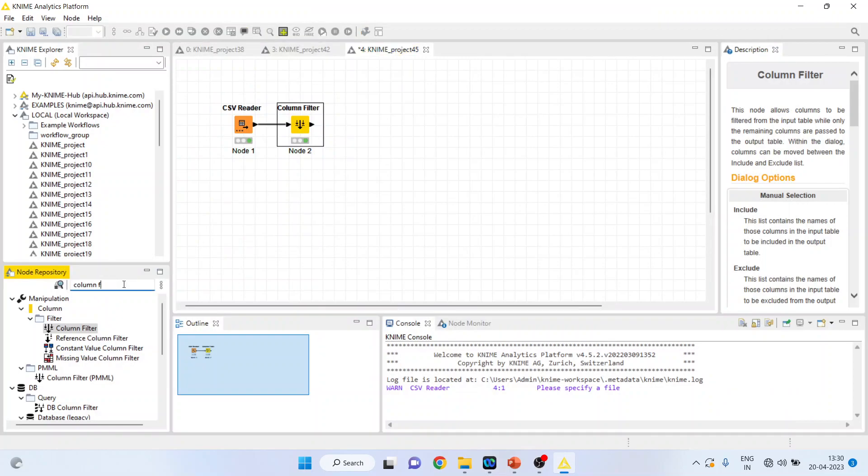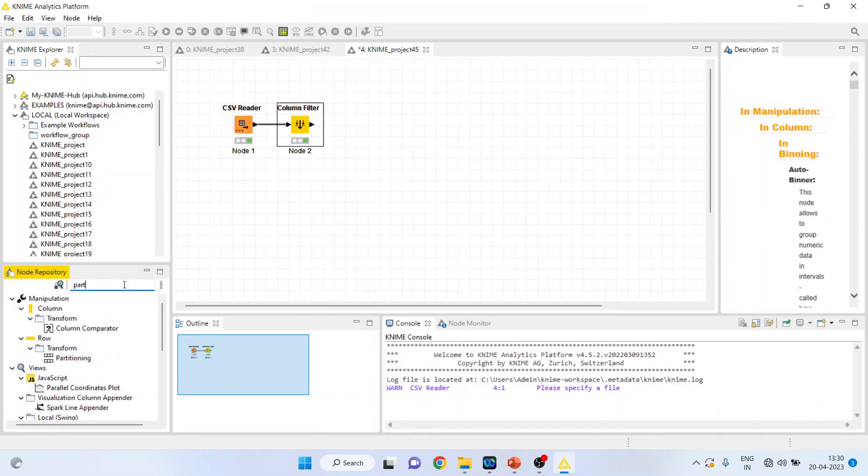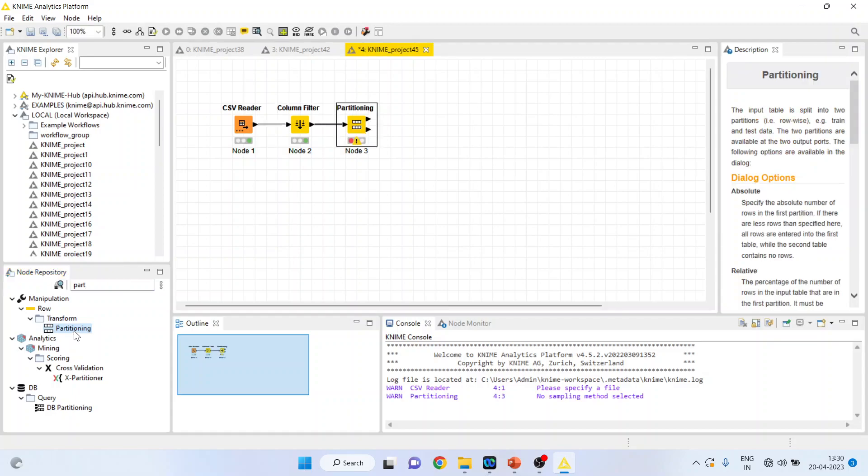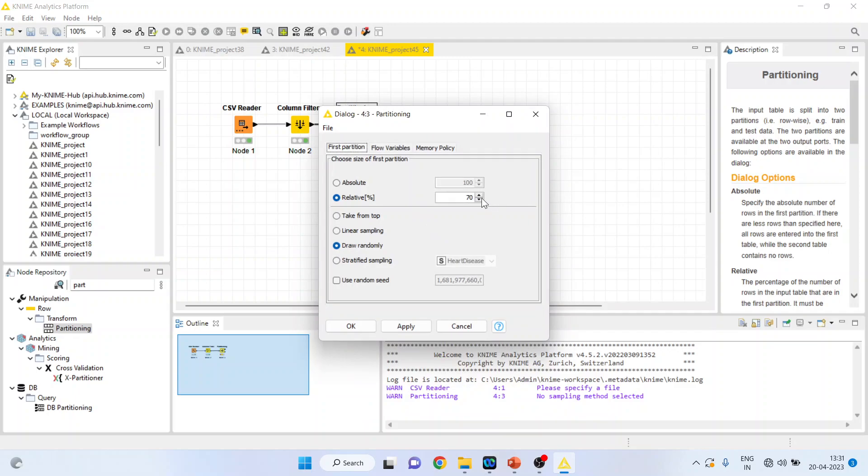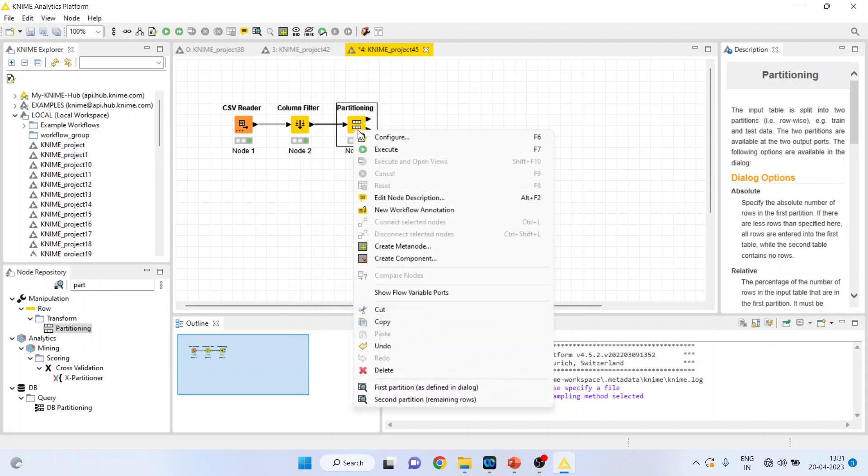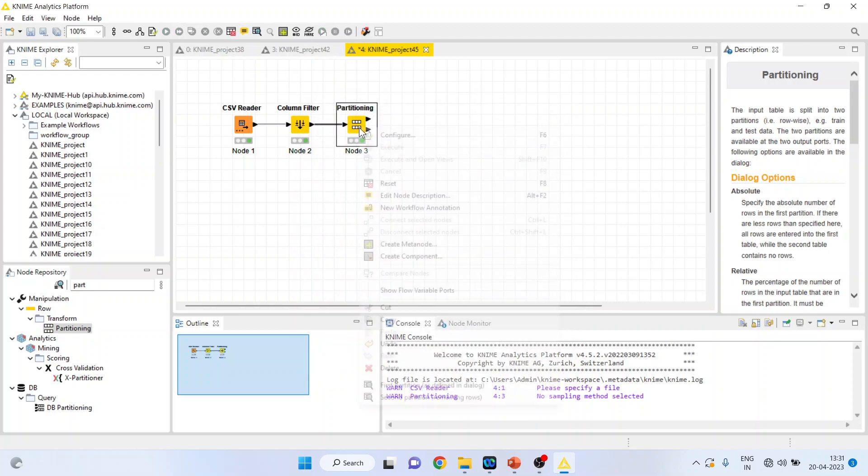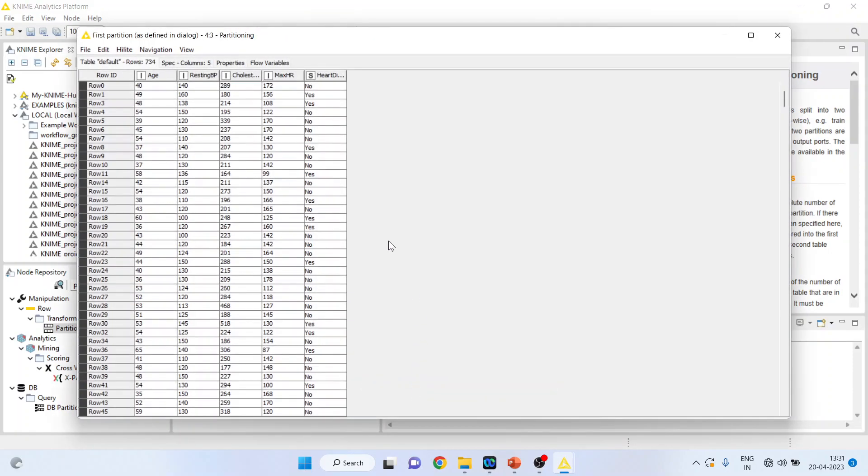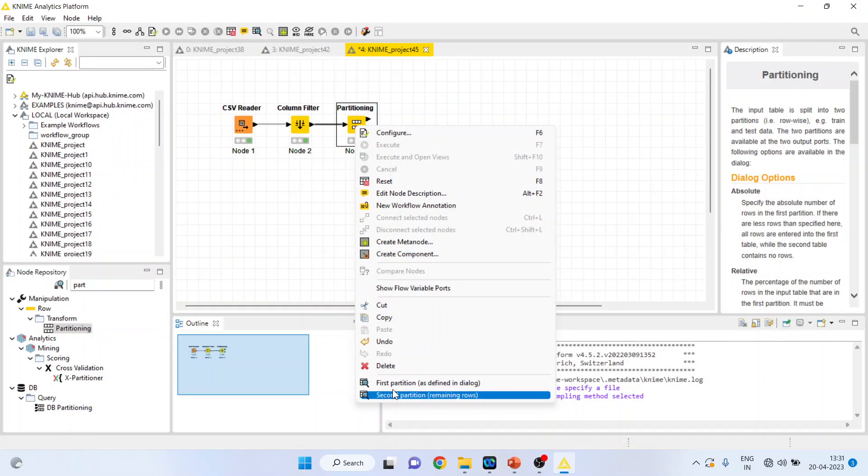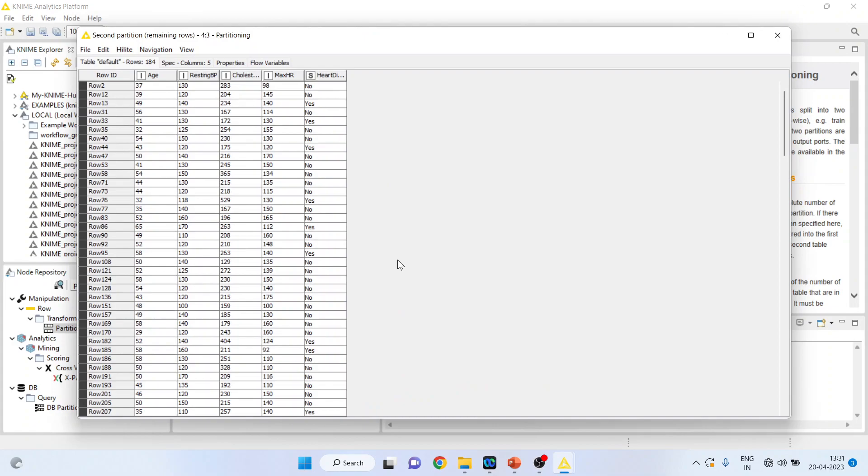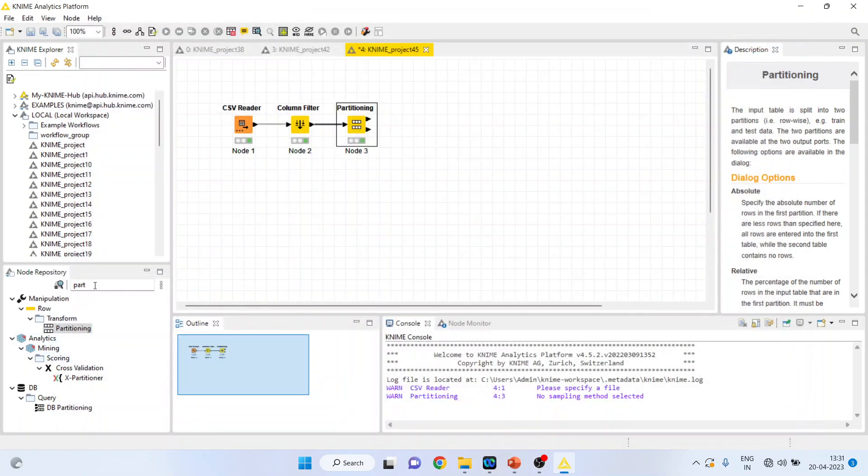Now activate the partitioning of the data set. We are activating this node because we want to partition the data into training and testing data sets. Activate this as 80% and make this as a stratified sampling. Click OK. Right-click on it and execute. Again, right-click on it and see the first partition. This is the 80% of the data set which will be used for training purpose. Click on the second partition. So this is 20% of the data which will be used for testing purpose.